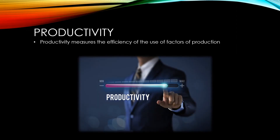Productivity is a slightly different thing. Productivity is a measure of the efficiency of the use of the factors of production. It measures the output per unit of input.